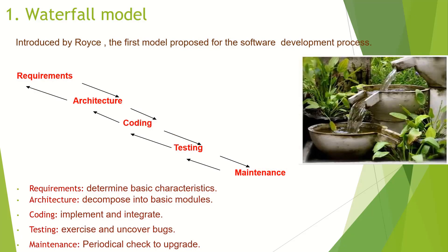Coming to the waterfall method — this is the first model proposed for the software development process. This model consists of 5 major phases: requirements, architecture, coding, testing, and maintenance. Requirements determines the basic characteristics. Architecture decomposes the functionality into major components. Coding implements the pieces and integrates them. Testing uncovers bugs and maintenance fixes bugs and upgrades the system.